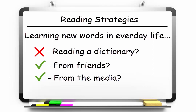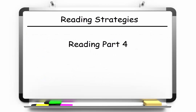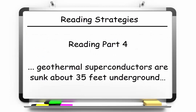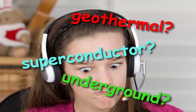Of course, this way of determining meanings can work not only for single words, but also for terms and phrases. Take this phrase, for instance, from reading part four. Geothermal superconductors are sunk about 35 feet underground. What's a geothermal superconductor and why is it underground? What does any of this mean? As you can see, if this phrase is taken on its own, it's pretty tough to figure out what's going on.